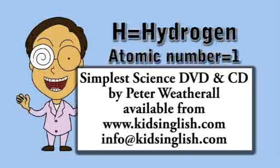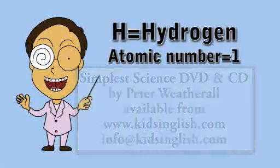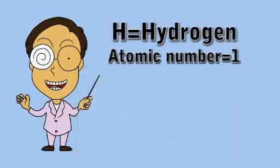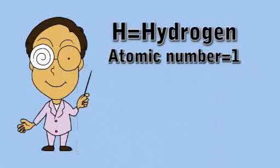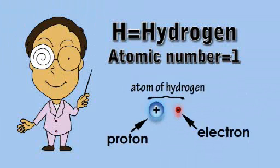In the periodic table, H stands for hydrogen, the element with atomic number 1. An atom of hydrogen is made up of just one proton and one electron.